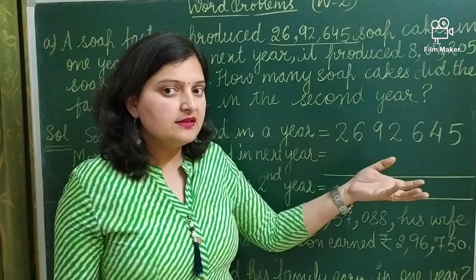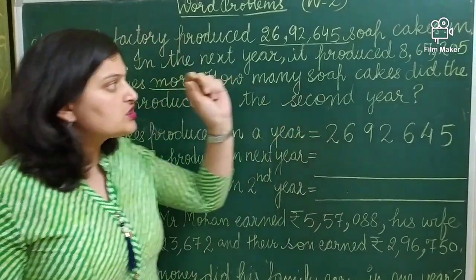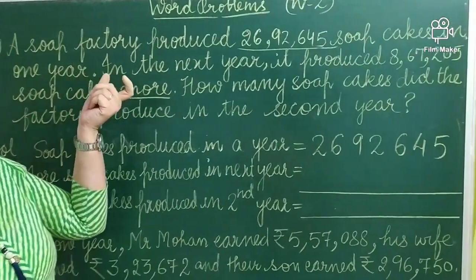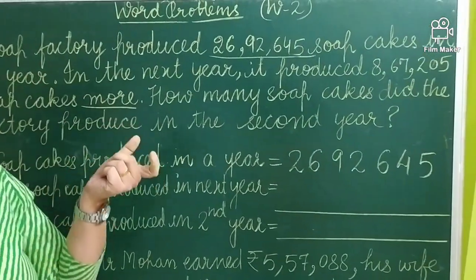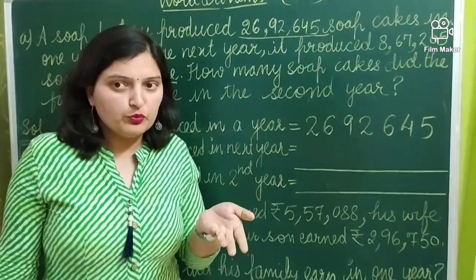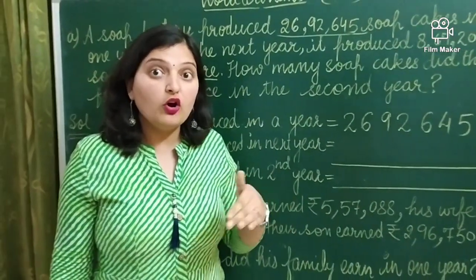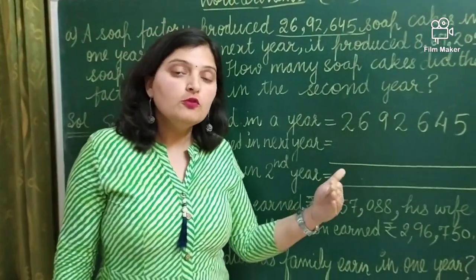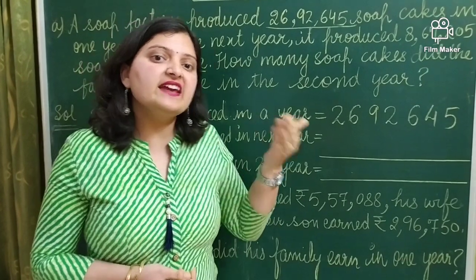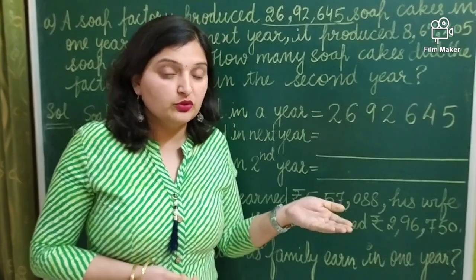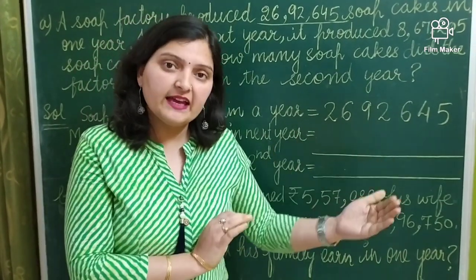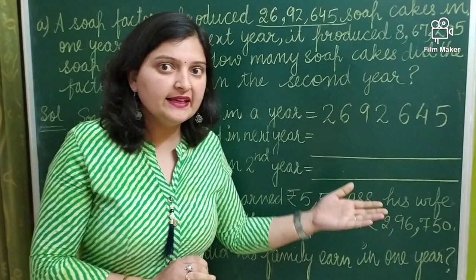For example, if we consider this with a small number — suppose a factory is producing 10 soap cakes in the first year, and next year it is producing 5 more than what it made before. So it means it made 10 plus 5.